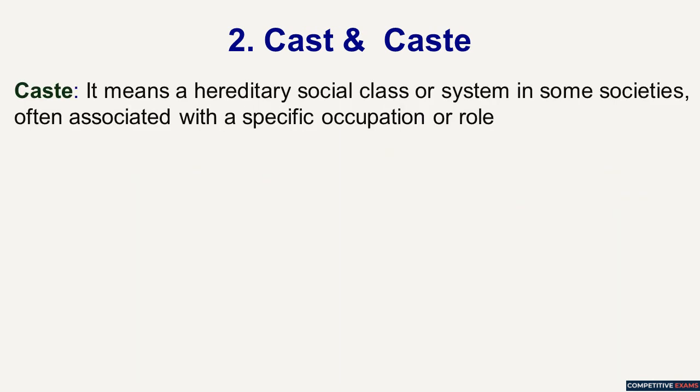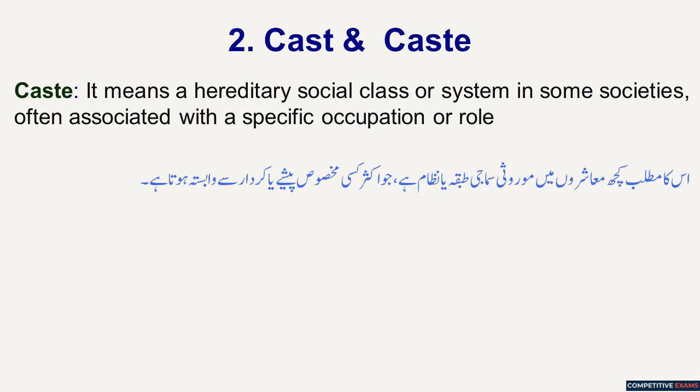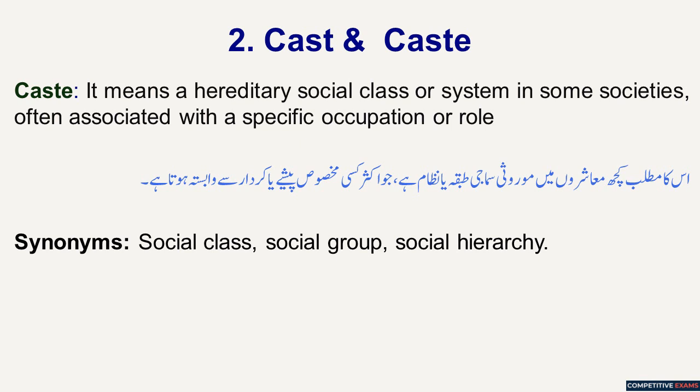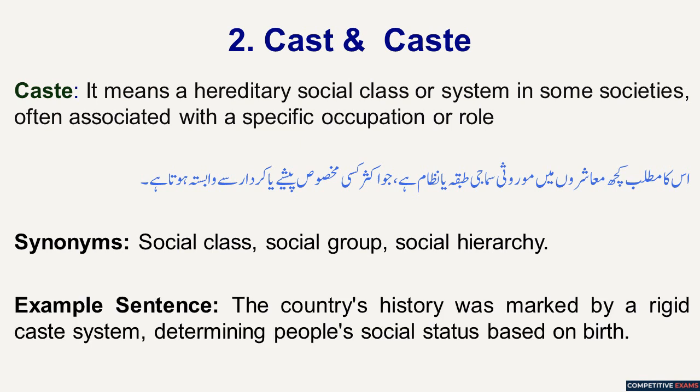Caste means a hereditary social class or system in some societies, often associated with a specific occupation or role. Synonyms include social class, social group and social hierarchy. Example sentence: The country's history was marked by a rigid caste system, determining people's social status based on birth.